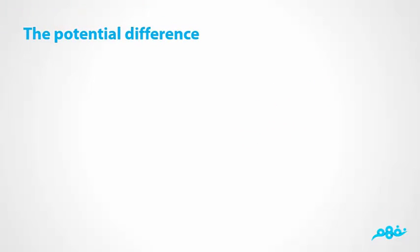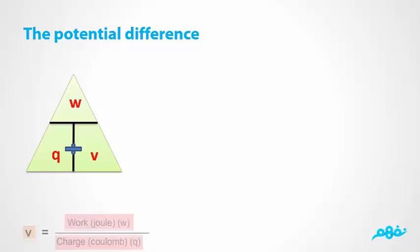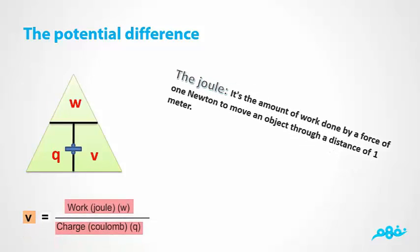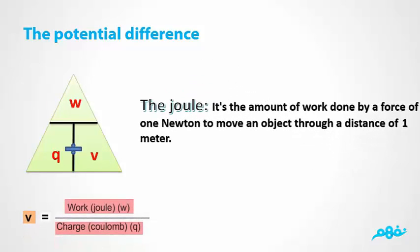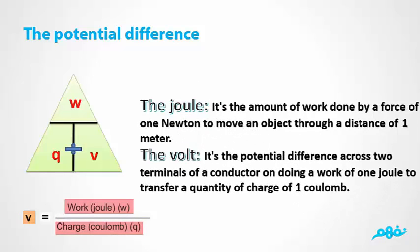The potential difference equals work (joule) over charge (coulomb): V equals W over Q. A joule is the amount of work done by a force of one newton moving an object through a distance of one meter. Volt is the potential difference between two poles of a conductor when doing a work of one joule to transfer a quantity of electricity of one coulomb.